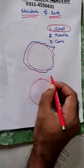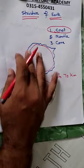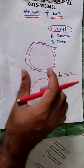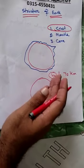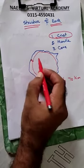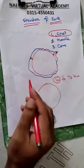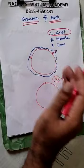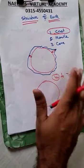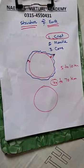The crust is about 70 km, or around 40 to 60 km. The crust is not a fixed thickness — it can range from about 5 to 10 km on the oceanic side, up to 40, 50, or 60 km for continental crust.